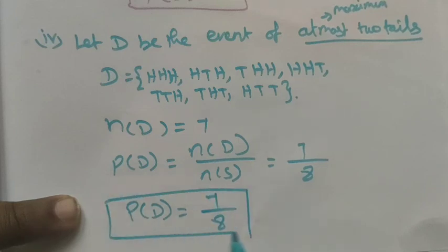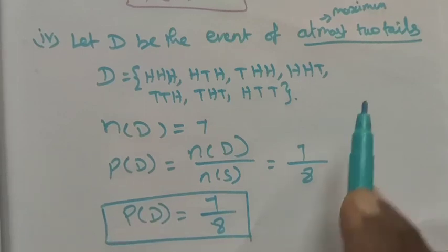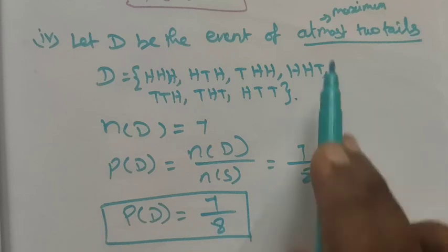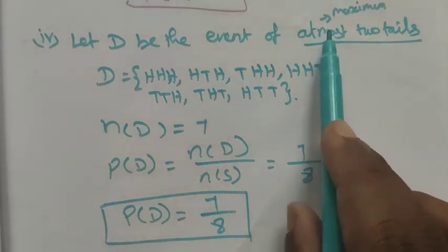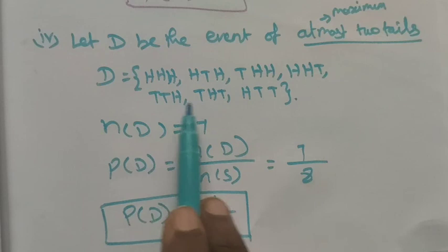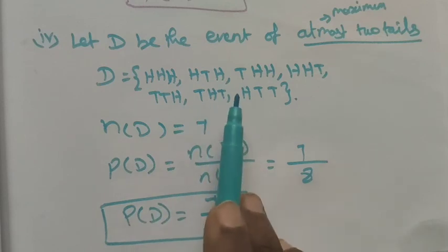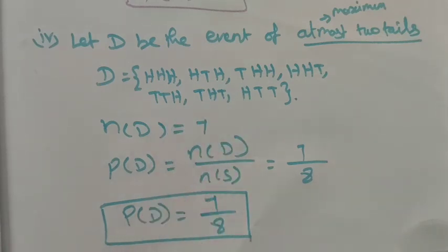So the probability of getting at most two tails is 7 out of 8. That is the final probability. Thank you, students.